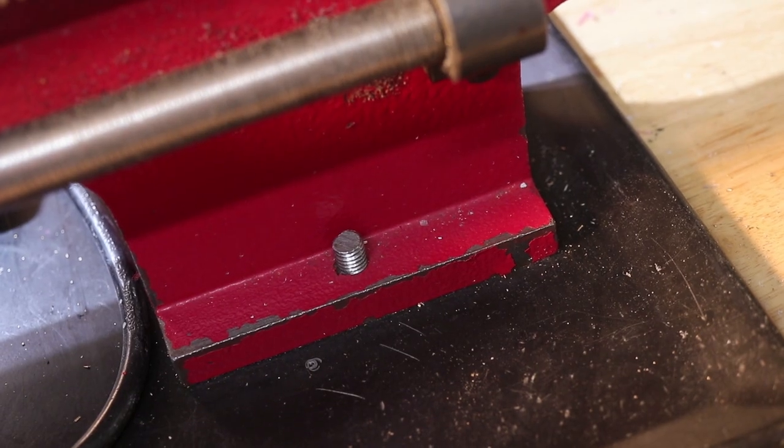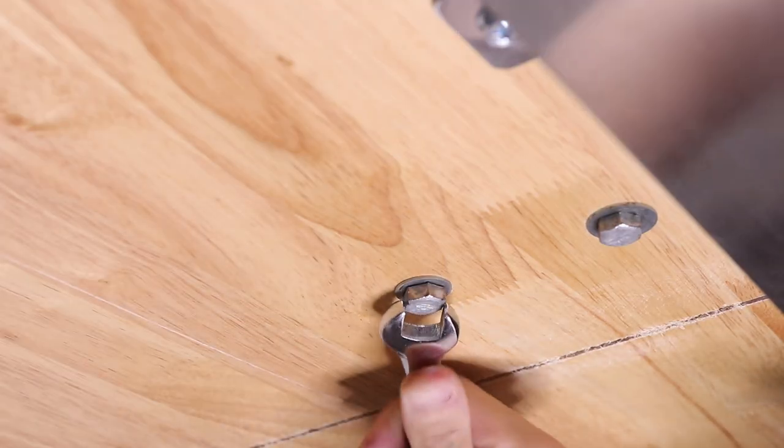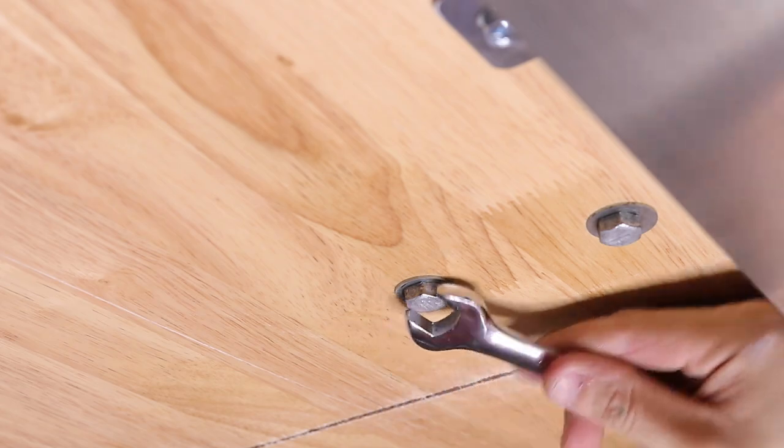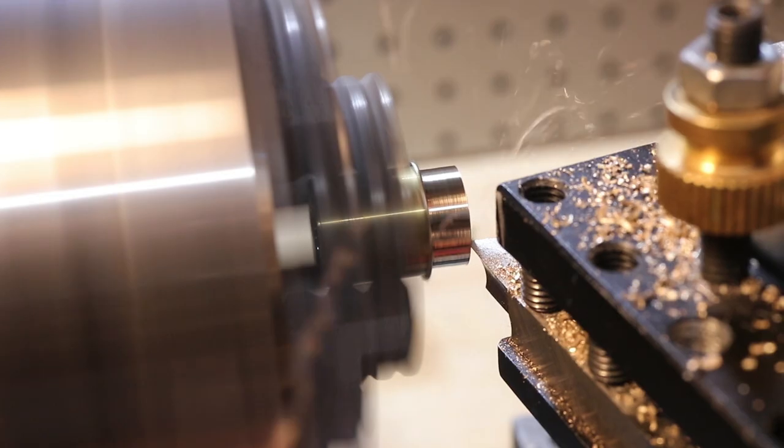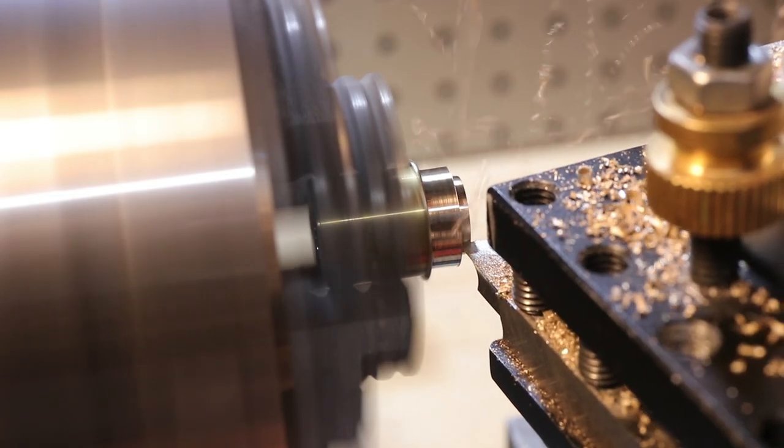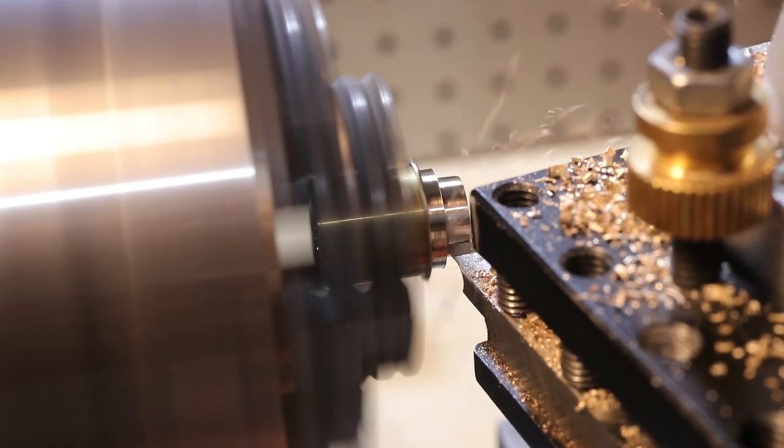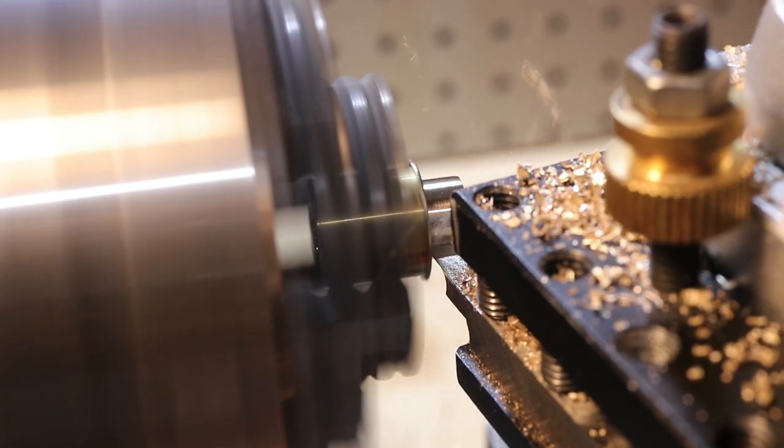Tip number two: please bolt your lathe down. Take it from me, someone who didn't do this for a bit. Bolting your lathe down to a workbench is a must-do from both a safety and quality of work point of view. Having a lathe which can easily move around is just a really dangerous practice, but bolting your lathe down will add so much more rigidity and the difference really does show up in the accuracy and finish of workpieces.